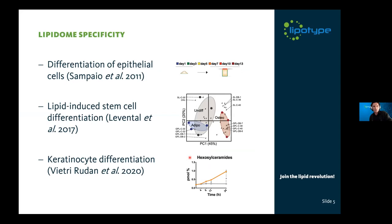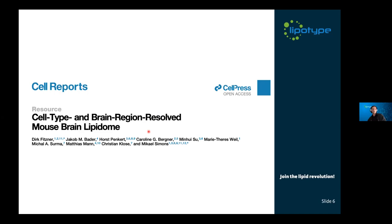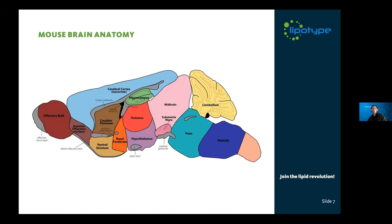I would like to talk about the mouse lipidome today. As an introduction, it is well established that lipidomes are highly specific to different types of samples, such as different cell types. They also change throughout differentiation, which has been shown for epithelial cells. There is also lipid-induced differentiation of stem cells. Last year, we showed together with our collaborators that keratinocytes during differentiation undergo quite a substantial remodeling of their lipid complement.